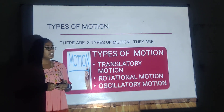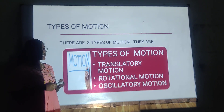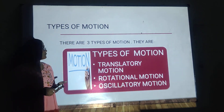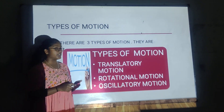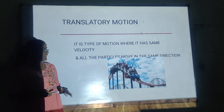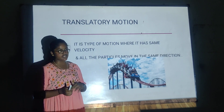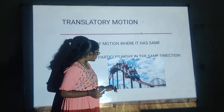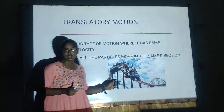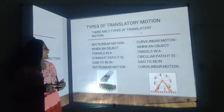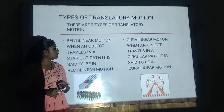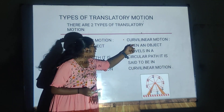Now let us see the types of motion. Motion is divided into three types: translatory motion, rotational motion, and oscillatory motion. Translatory motion is the type of motion where all the particles have the same velocity and move in the same direction. Translatory motion is further divided into two types: rectilinear motion and curvilinear motion.